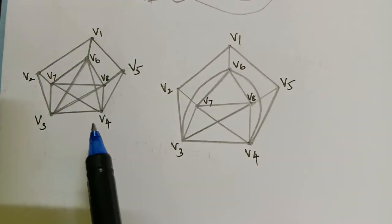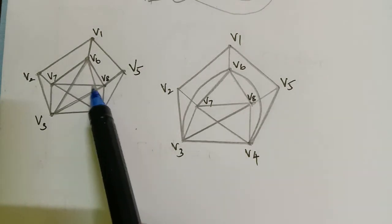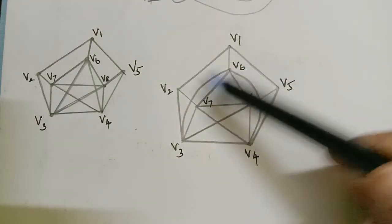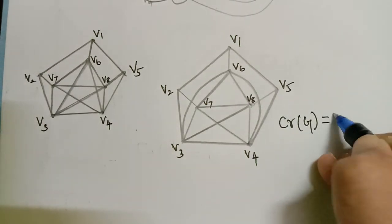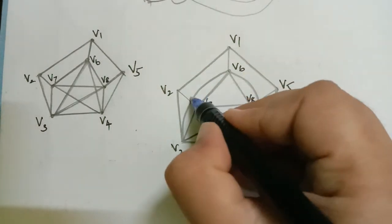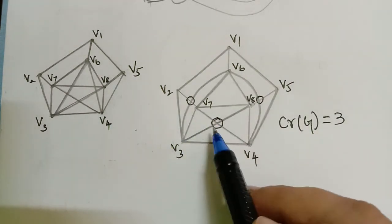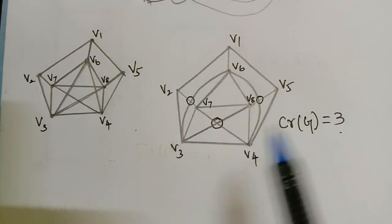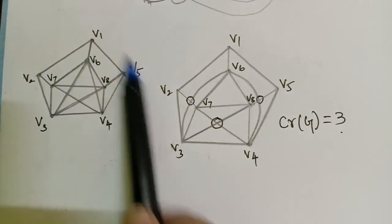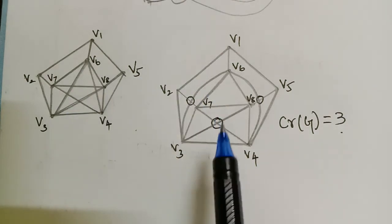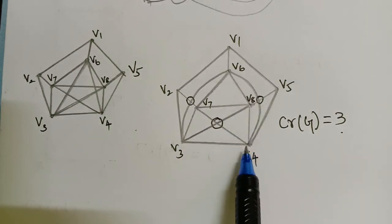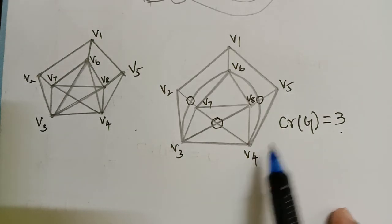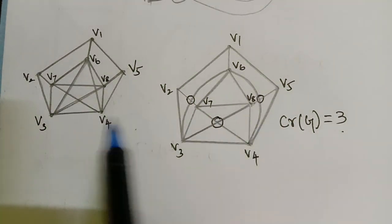We shall now see one more last example. This graph has so many crossings. We have redrawn it in a plane to reduce crossings, but the minimum I could achieve is a crossing number of 3 — the graph crosses here, here and here. So the minimum number of crossings is equal to 3. If you are able to draw it with fewer than 3 crossings, please mention it in the comment box. Your homework will be to try drawing it with fewer than 3 crossings.